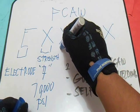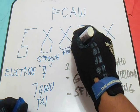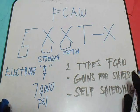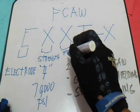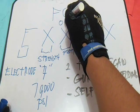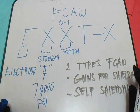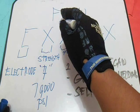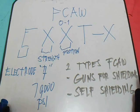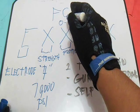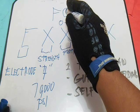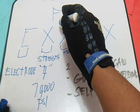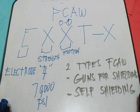Next is the position. We have either 0 or 1 for the position. 0 means it is suitable for flat or horizontal fillet only. 1 means it can be used in any position.